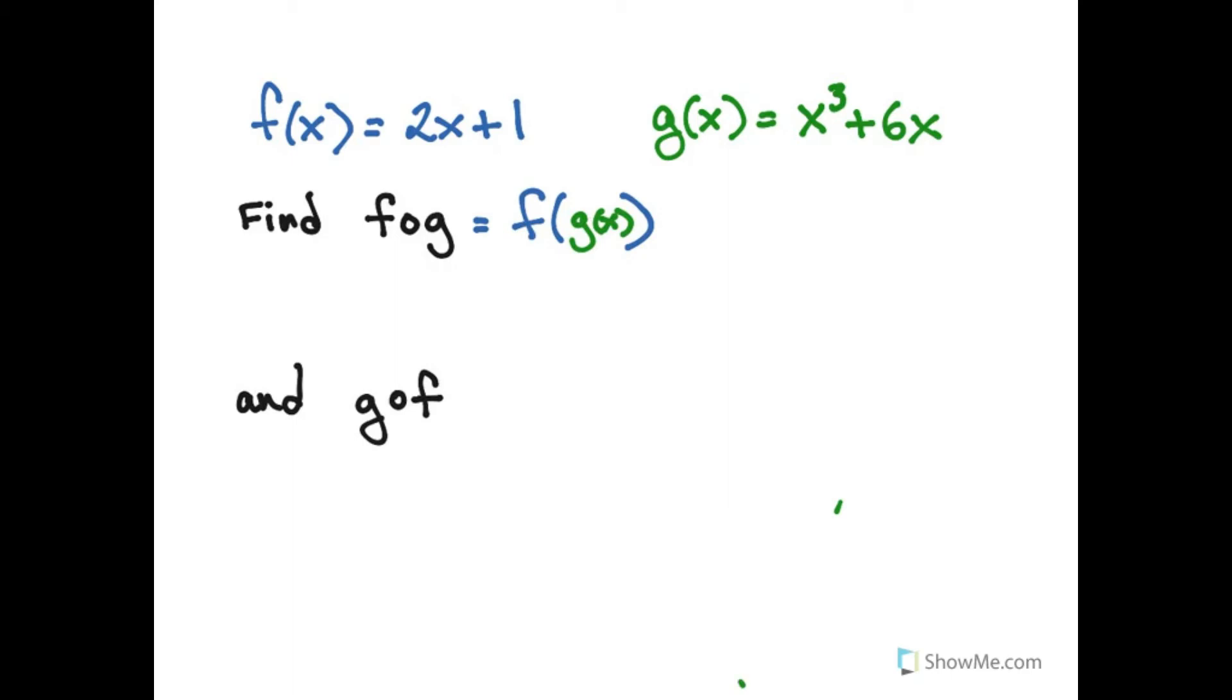Well f composed g would be written f of g of x, whereas g composed f would be written g of f of x. And that tells what goes inside of what. If f is on the outside I write the expression for f and then I plop g inside of it. And that's the composition f with g.